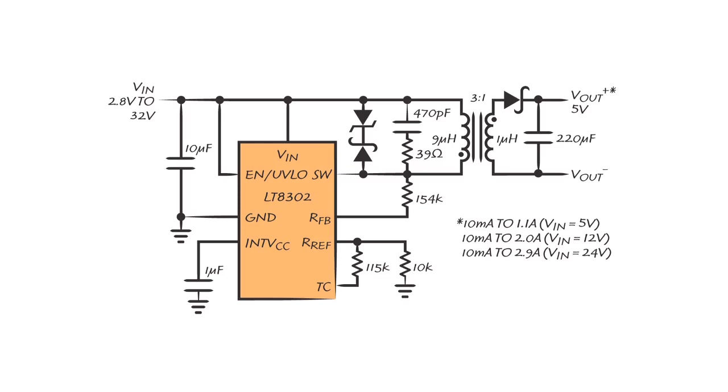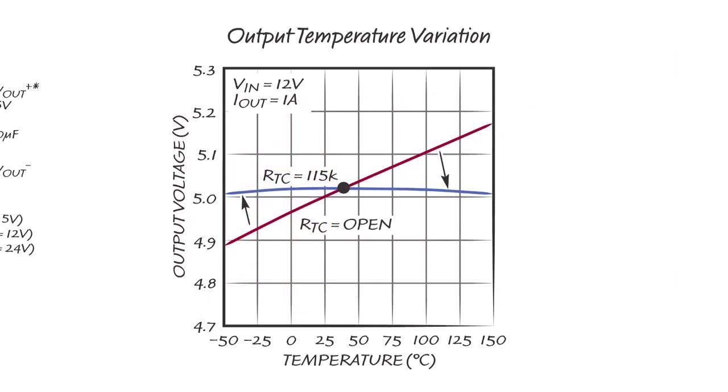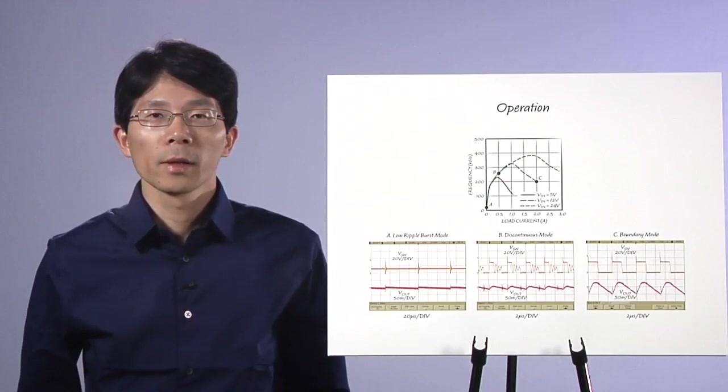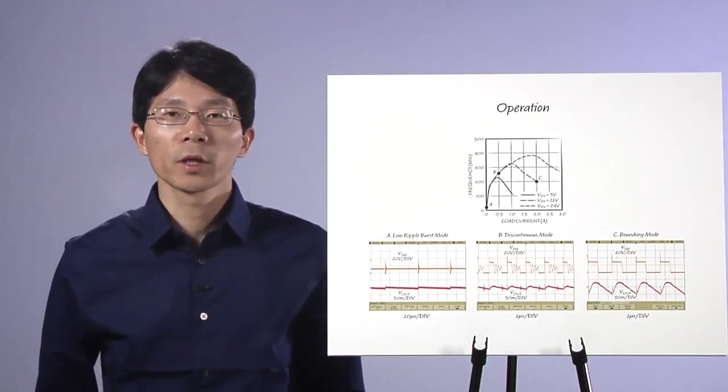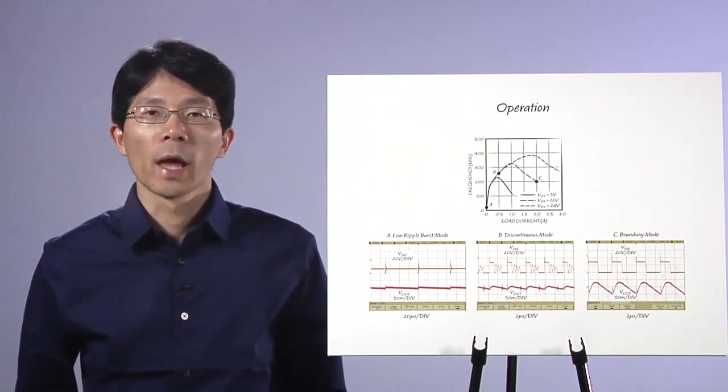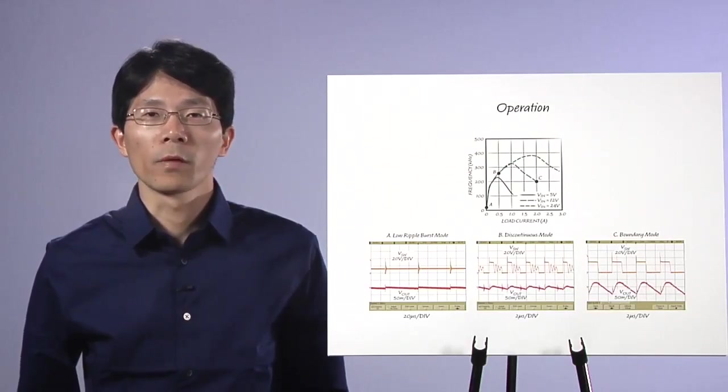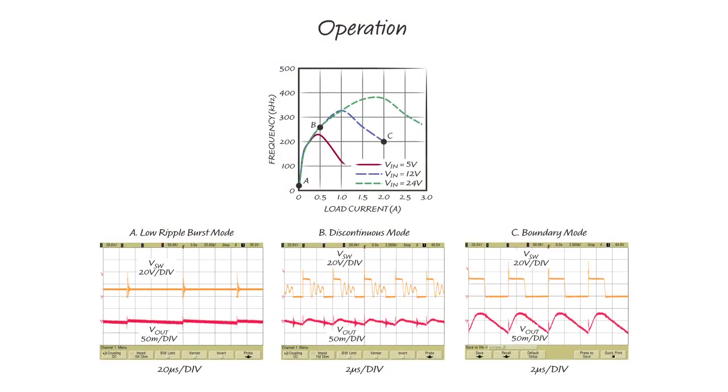Housed in an LISO package with an exposed pad, the LT8302 offers output temperature compensation. With a 115K TC resistor, the output variation across temperature is fully compensated. Now let's use a 5-volt application with LT8302 to demonstrate the operation and performance of our Low IQ No Opto Flyback ICs.